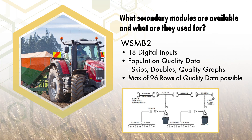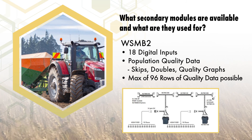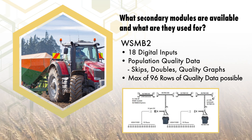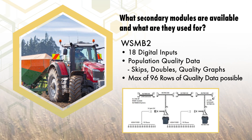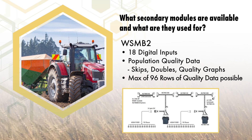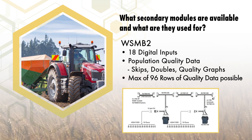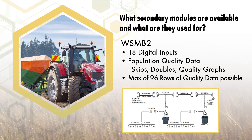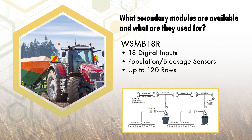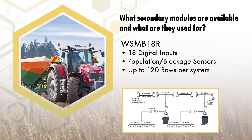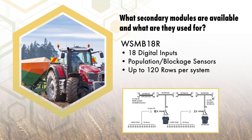In a larger row crop planter application, working set member two modules can be incorporated to give up to a total of 96 rows, 18 for each module, of seed quality data. In the case of simple population reporting or use with blockage sensors like on an air cart, the working set member 18R modules report up to 18 rows with a maximum of 120 rows per system.